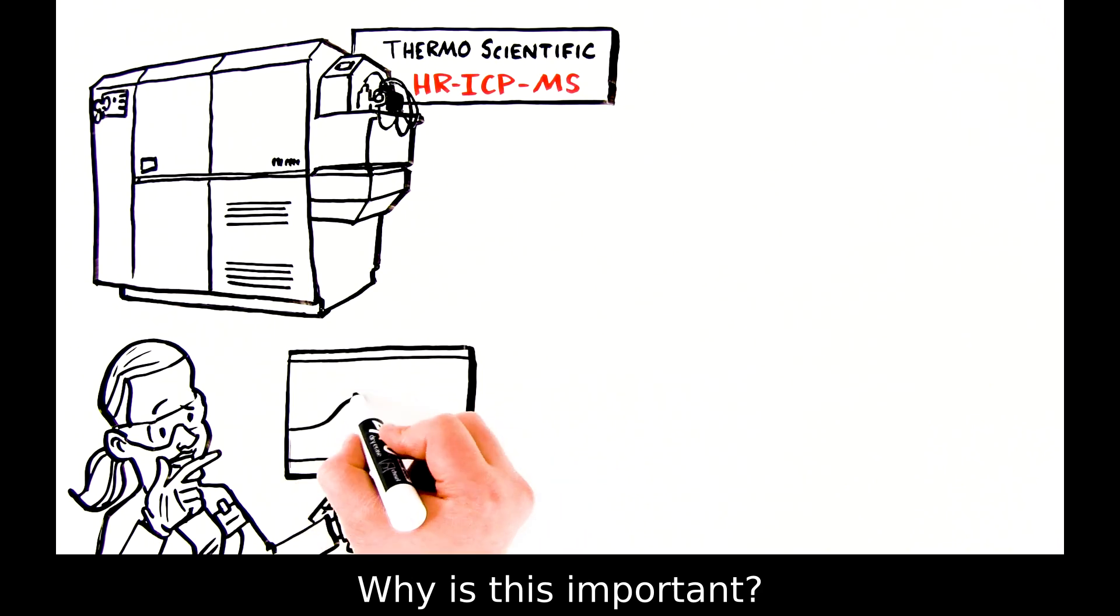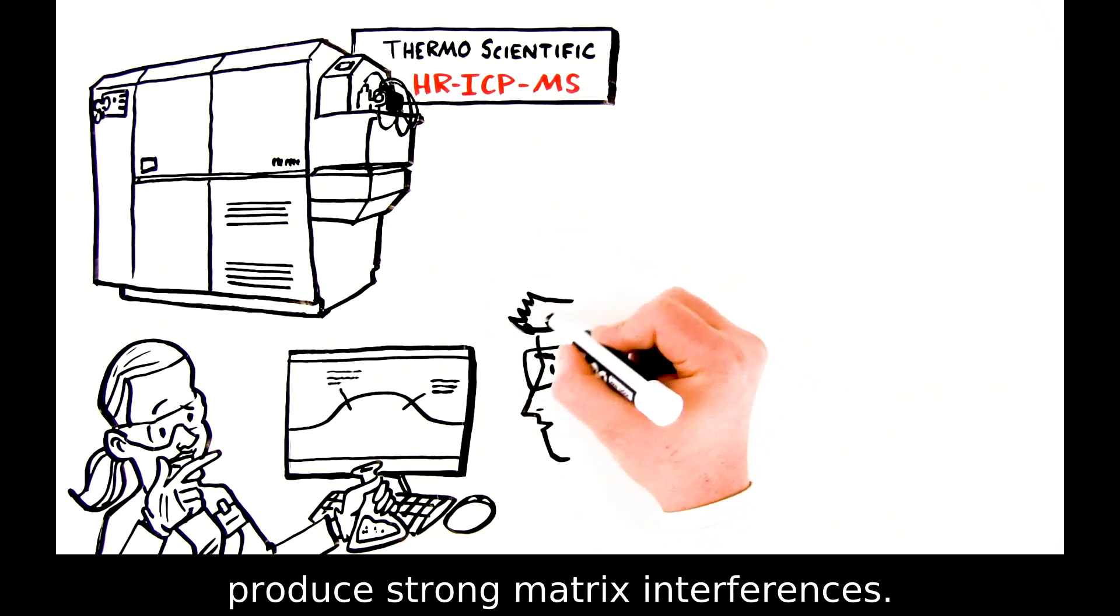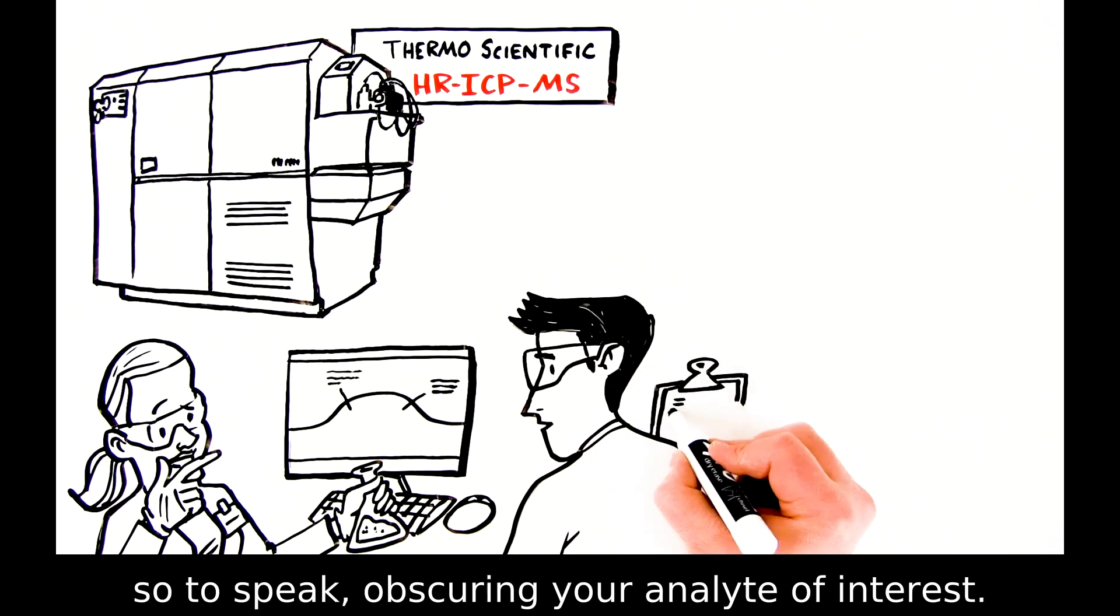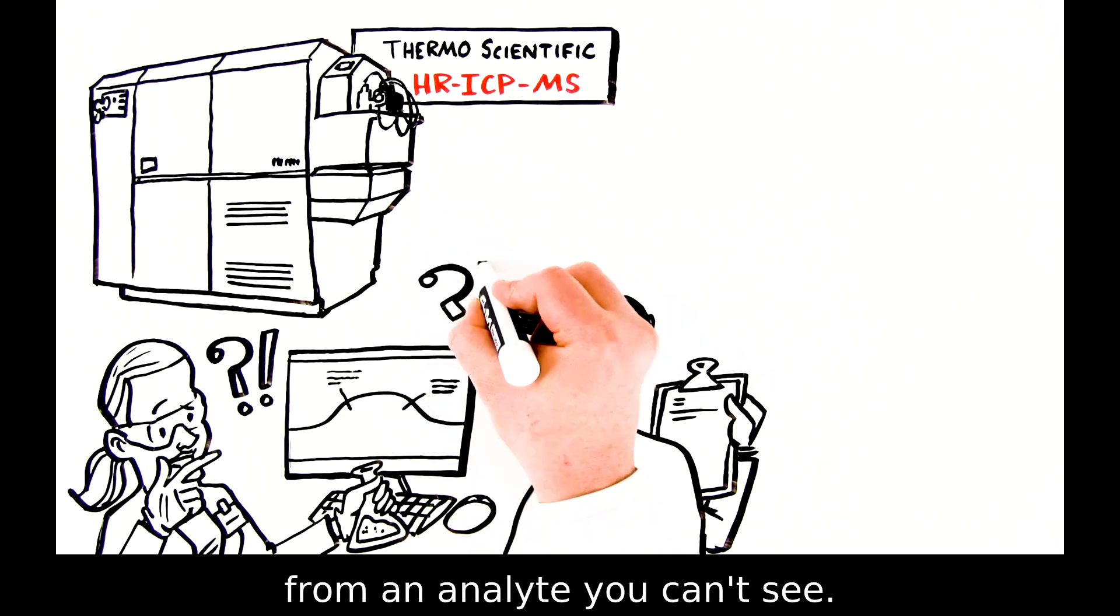Why is this important? Sometimes, samples at trace level produce strong matrix interferences. These interferences muddy the water, so to speak, obscuring your analyte of interest, and you can't learn anything from an analyte you can't see.